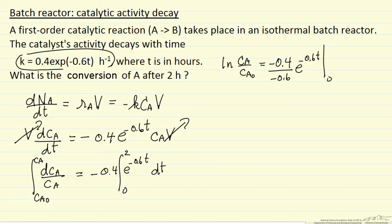And evaluate it between these limits of 0 and 2 hours. So the right side, this is 0.667 to 3 significant figures. The limits then are minus 1.2 minus e to the 0, and of course e to the 0 is 1. If I calculate out these numbers, this is minus 0.466.